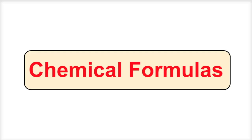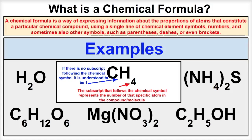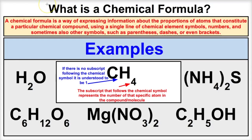Hey you guys, this is Mr. Millings and today we're gonna learn about chemical formulas. So what are chemical formulas and how do they work? A chemical formula is a way of expressing information about the proportion of atoms that constitute a particular chemical compound using a single line of chemical element symbols,